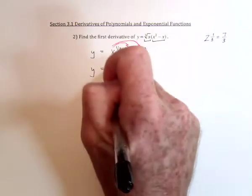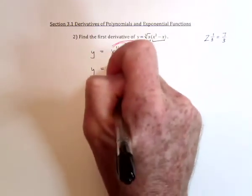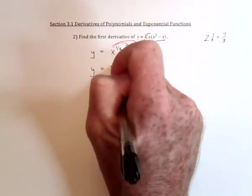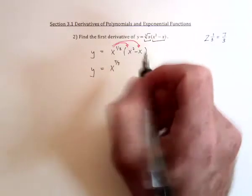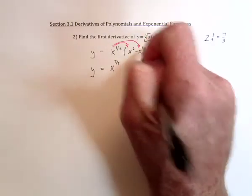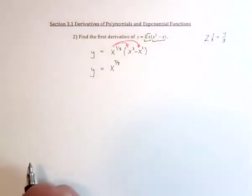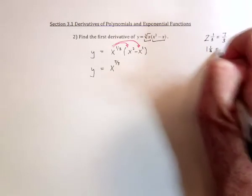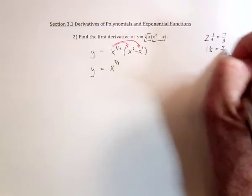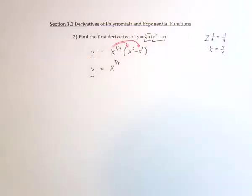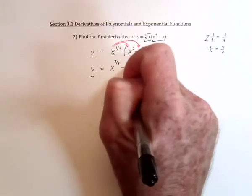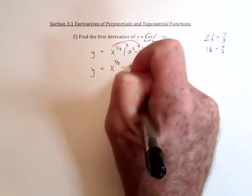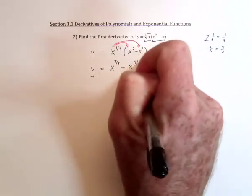So we've got x to the seven-thirds, and then for this term the exponent is one, so we'd have one and a third. One plus a third is four-thirds, so minus x to the four-thirds.